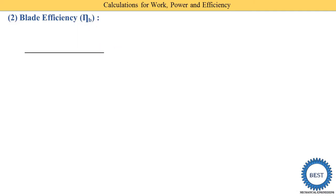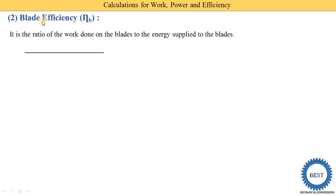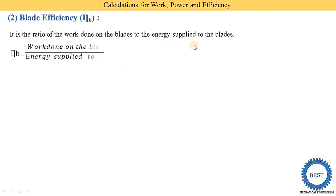Next we find out blade efficiency, denoted by the blade efficiency symbol. Efficiency is the ratio of output to input. Here, the output of the blade is the work produced by the blade, and the input is the energy supplied to the blade. So blade efficiency equals work done by the blade divided by energy supplied to the blade.